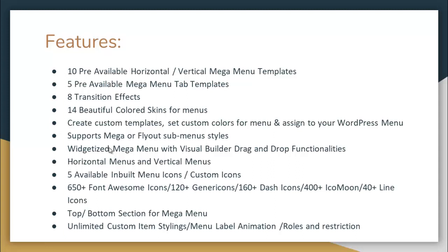There are also 160-plus Dashicons, 400-plus Icomoon icons, and 40-plus Line icons. It has top and bottom selection for Mega Menu options. And of course, unlimited custom item stylings, menu label animations, and roles and restrictions that you can set on your backend.